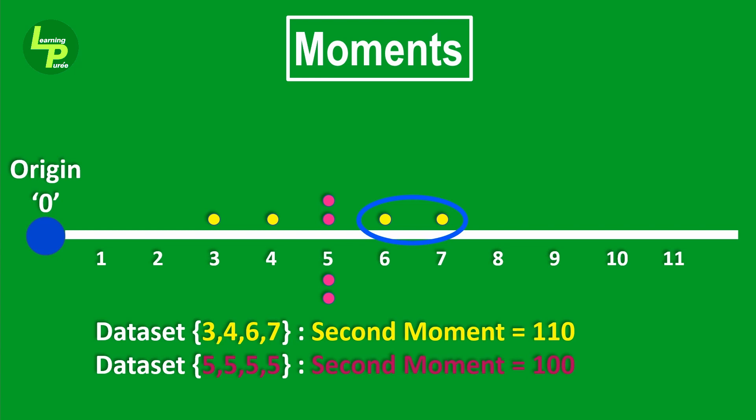Now, when we consider these larger distances, we, in a way, include the effect of 5 in the outcome, which is also the average.